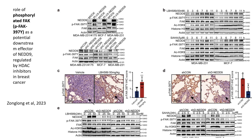Panel B demonstrates that treatment with HDAC inhibitors LBH589 and Saha increases FAK phosphorylation levels over time, correlating with elevated NET9 expression and histone acetylation, suggesting a pathway where HDAC inhibitors regulate FAK phosphorylation through NET9. In panel C, IHC staining of lung metastases from mice treated with LBH589 reveals increased FAK phosphorylation expression compared to vehicle controls, with quantification confirming the statistical significance of this increase.